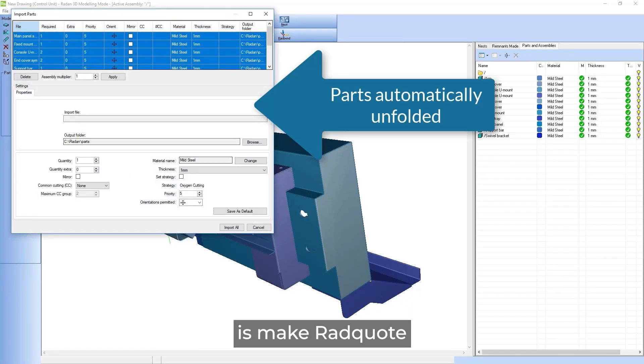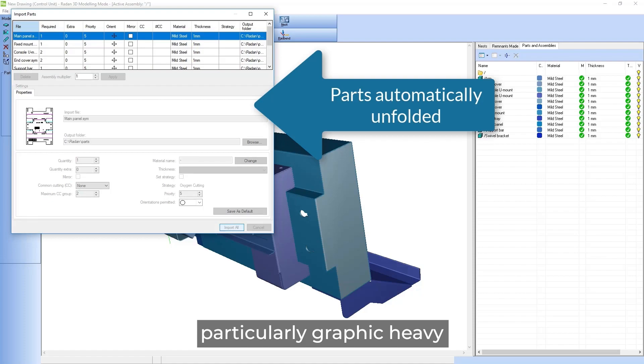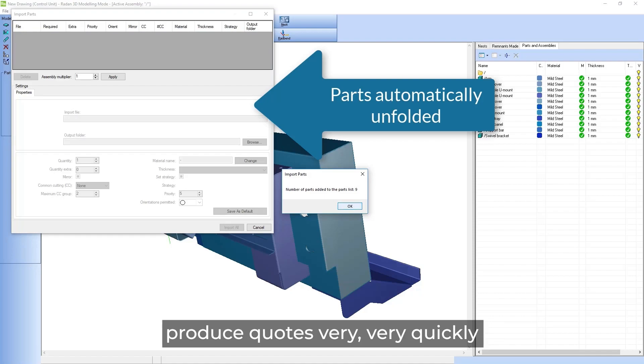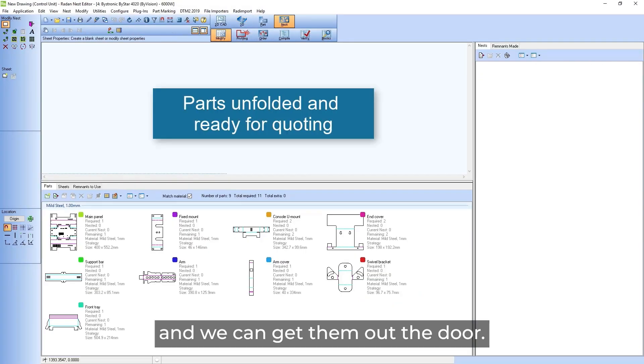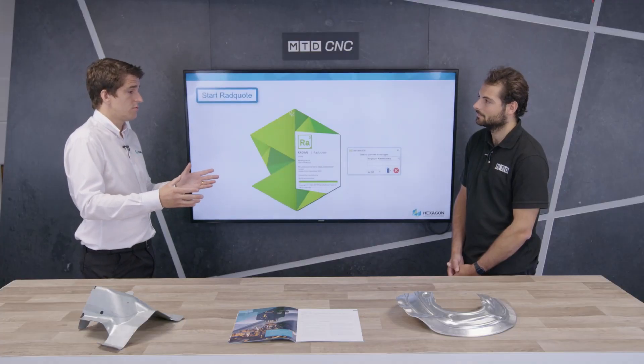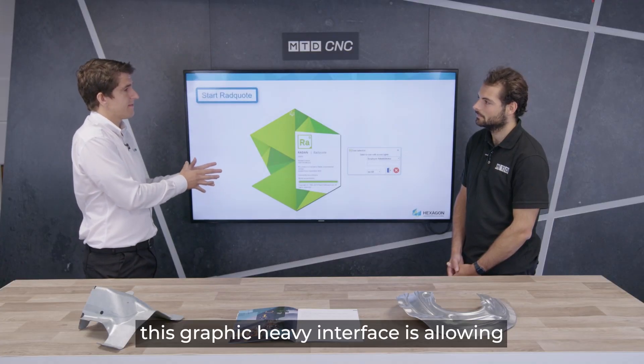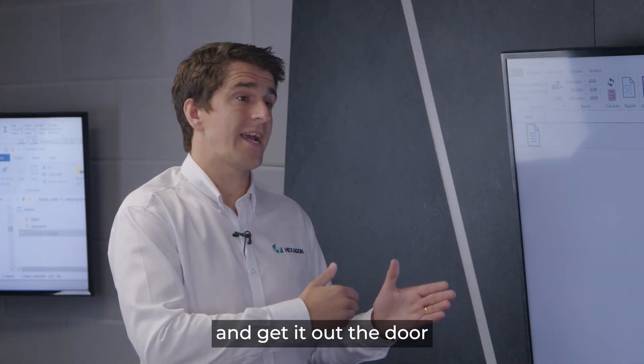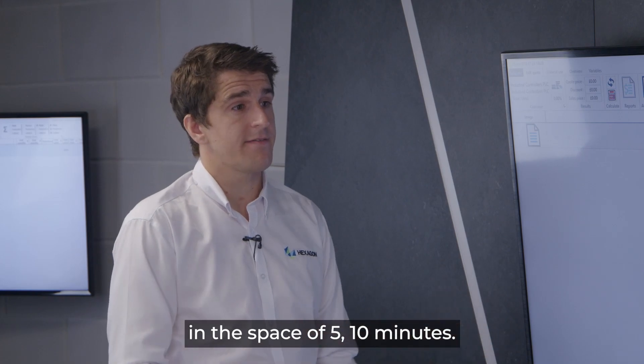So what we've done then is made RadQuote particularly graphic heavy and more for an unskilled or a non-engineering type person can then produce quotes very very quickly and we can get them out the door. So rather than taking an hour, two hours which a skilled engineer would do we can say this graphic heavy interface is allowing non-engineering person to develop that quote and get it out the door in the space of five, ten minutes.